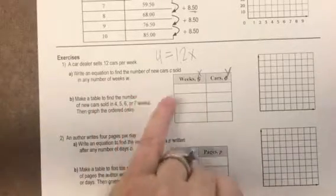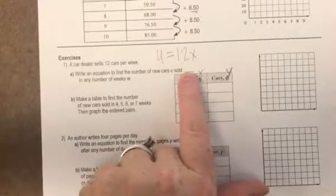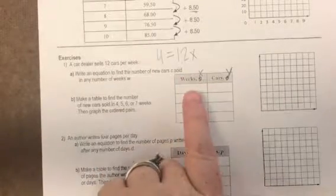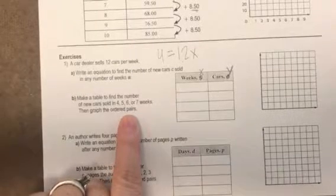Write an equation to find the number of cars sold. We just change that to x and y, so we already did that part, right? Am I going too fast? So y equals 12x.